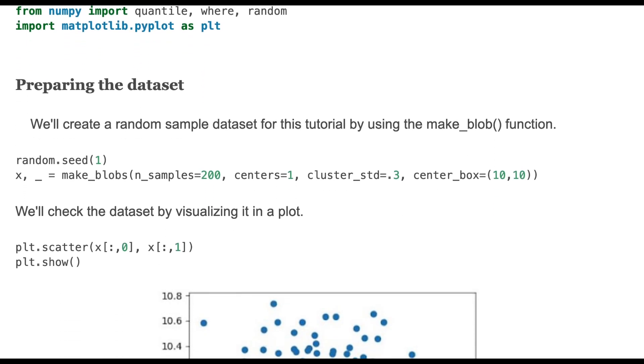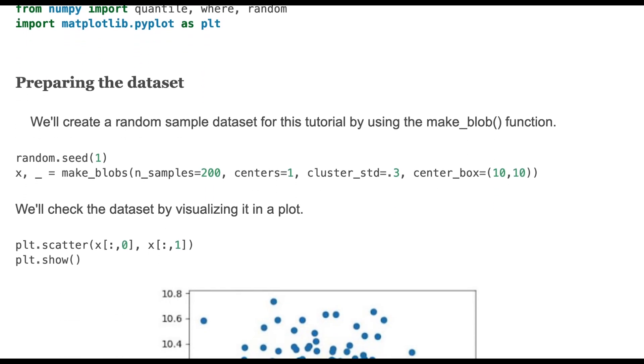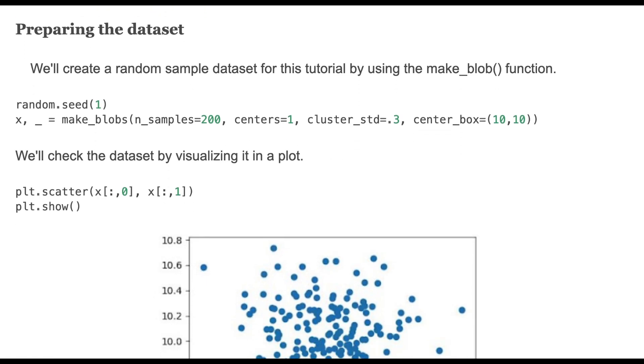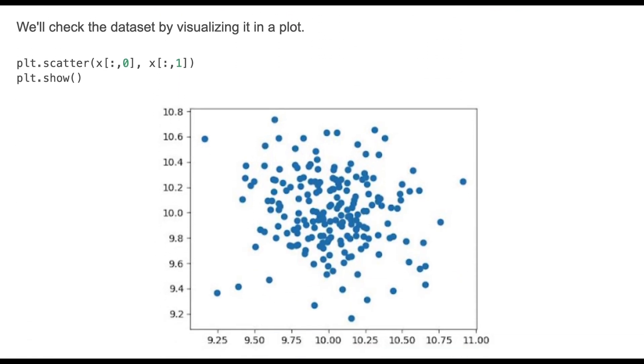We'll create a random sample dataset for this tutorial by using the make_blobs function. The code shows how to generate random sample data and then we'll visualize it in a plot. Here is a scatter plot.